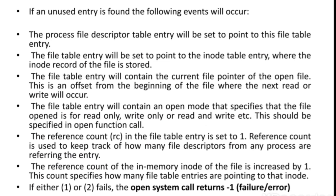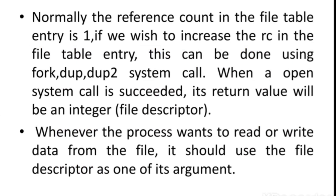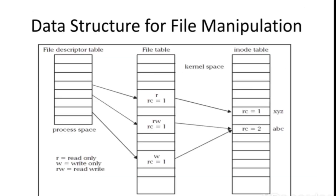If the open system call succeeds it returns zero; if it fails it returns minus one. Whenever a process wants to read or write from a file, it should use the file descriptor as one of its arguments. The descriptor information present in the process space is needed to reference the file table and also the inode table. Reference count can be increased beyond one using system calls like fork or dup.